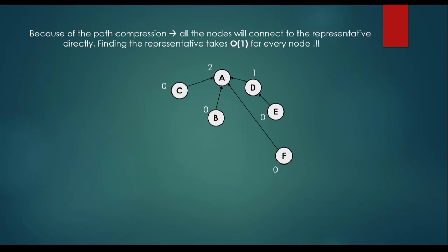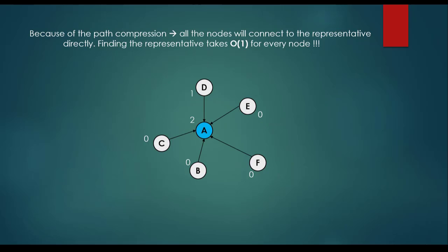For example, looking for node E causes it to point directly to node A — this is path compression. Because all nodes point to the representative, finding the representative takes O(1) constant time. The parent of B is A, the parent of D is A, the parent of F is A. We get the representative in O(1), making the algorithm very fast. This disjoint set union find structure will be used in Kruskal's algorithm.